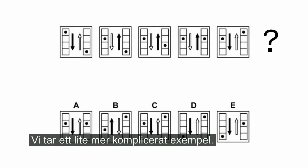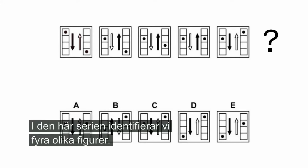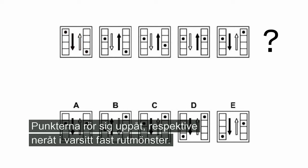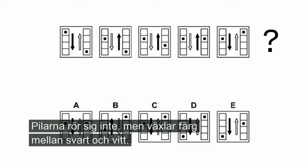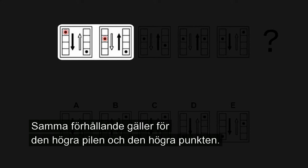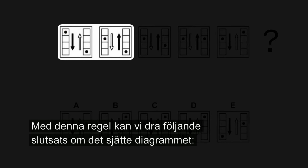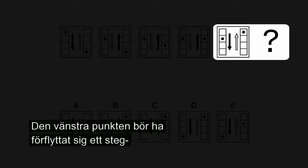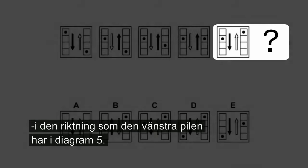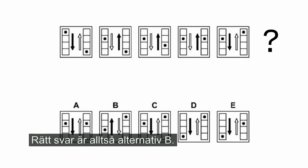Vi tar ett lite mer komplicerat exempel. I den här serien identifierar vi fyra olika figurer: två svarta punkter och två pilar. Punkterna rör sig uppåt respektive neråt i varsitt fast rutmönster. Pilarna rör sig inte, men växlar färg mellan svart och vitt. Regeln är: om den vänstra pilen är svart rör sig den vänstra punkten ett steg i pilens riktning i efterföljande diagram — samma förhållande gäller för den högra pilen och punkten. Den vänstra punkten bör ha förflyttat sig ett steg i den riktning som den vänstra pilen har i diagram 5. Rätt svar är alltså alternativ B.